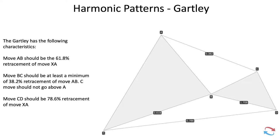The X-to-A move is your initial move from the low to the high, and your retracement move is the 61.8% Fibonacci ratio. Price has to at least touch this 61.8% level, but it cannot touch the 78.6% — it can't go lower than the 78.6%. Once you get a retracement that hits the 61.8%, you've got your A-to-B leg.